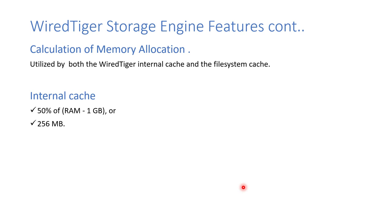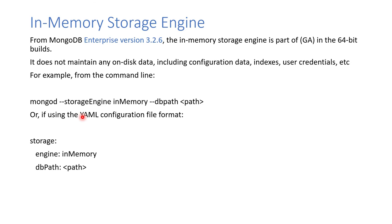Another important feature is memory utilization. Whatever memory you allocate to the WiredTiger storage engine is used in the internal cache and file system cache. For example, with 10 GB of RAM, the internal cache uses 50 percent minus 1 GB — that is, 10 divided by 2 equals 5, minus 1 equals 4 GB. If the available RAM is less than that threshold, 256 MB is used instead.